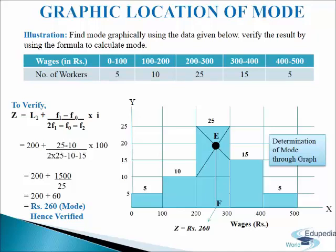We can verify this by using the formula. The formula of mode is: Z = L1 + [(F1 − F0) / (2F1 − F0 − F2)] × I. We will put the data into it and calculate. After calculation, you will get rupees 260 as mode. So you can see that graphically and with the formula the mode is the same — hence verified.